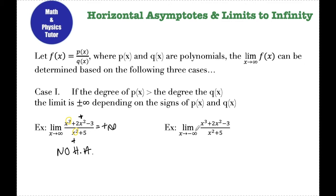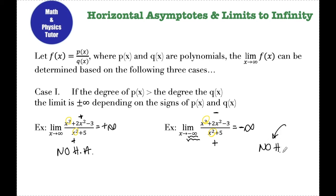The second example says the limit as x approaches negative infinity of the same function. The degree of the numerator is 3 and the degree of the denominator is 2, so since the degree of the numerator is bigger, the limit here is going to be positive or negative infinity — I just need to figure out which. If I take a negative number and plug it in for x cubed, a negative number cubed is negative, which means the numerator is always going to be negative. In the denominator, if I take a negative number and square it, that number is always going to be positive. So I have a negative number divided by a positive number, which is negative. As the x values approach negative infinity, the y values are also going to approach negative infinity. There is no horizontal asymptote.